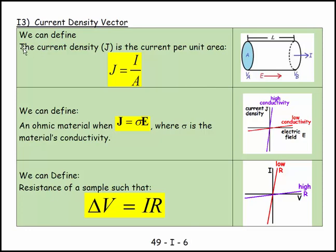We can define current density vector, and it is the current per unit area. We imagine current going through here, and it depends on the more current going through a smaller area, the bigger the value of J, and the less current going through a given area, the smaller the value of J.